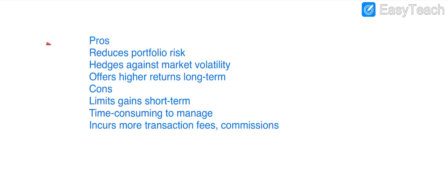The pros and cons of diversification: First pro is reduced portfolio risk — when you have different types of diversified assets in your portfolio, it shows reduced risk. Second pro is hedges against market volatility, meaning it provides economic stability against changing market conditions.